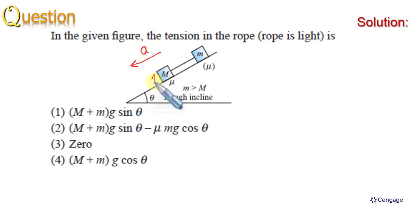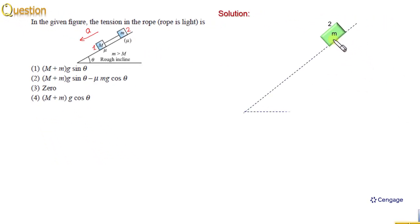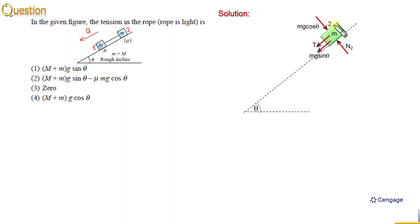Say this block is block number one and this is block number two. Now we can draw the free body diagram. First, consider block number two. The component of the weight perpendicular to the inclined plane and parallel to the inclined plane — this is the normal reaction, this is the tension force. Since it is sliding down, friction will be in the upward direction and kinetic in nature.